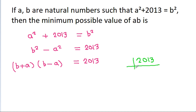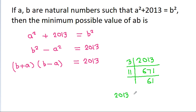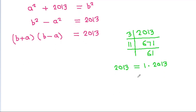And 2013 is 3 times 671, and 11 times 183. So we can write 2013 as 1 times 2013, or 3 times 671, or 11 times 61. Wait — 2013 factors as 3 × 11 × 61.